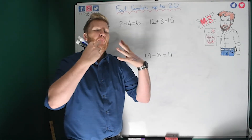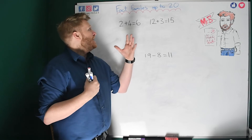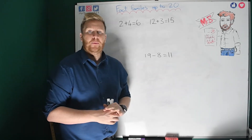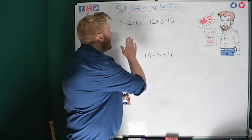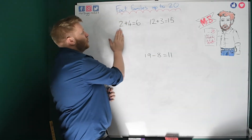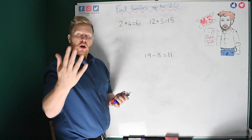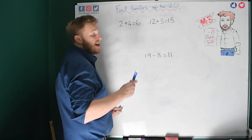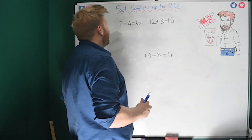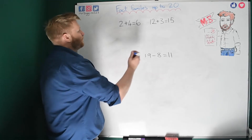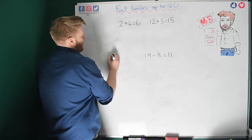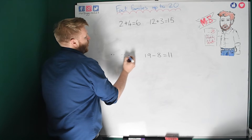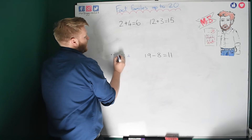Fact families are a brilliant way for us to be able to know the answer to some sums without working them out. Let me show you how it works. I've got three sums here. I'm going to start with this one: we've got 2 plus 4 equals 6. Not too much of a hard question, but I'm going to show you how a fact family works.